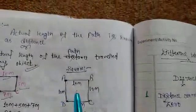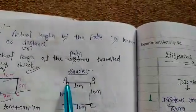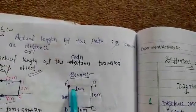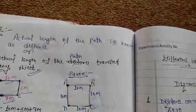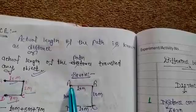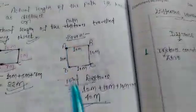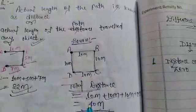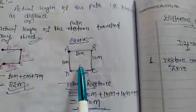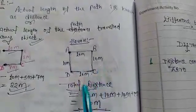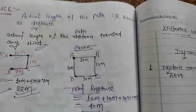Suppose an object travels from A to B, B to C, C to D, and D to A. Each side is 10 meters, so the total distance covered by the object is 40 meters.